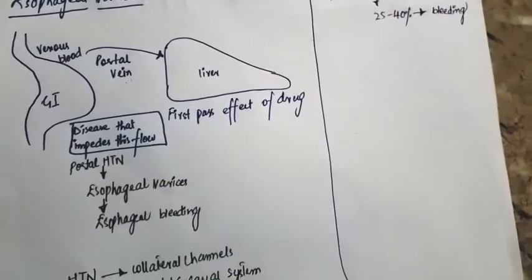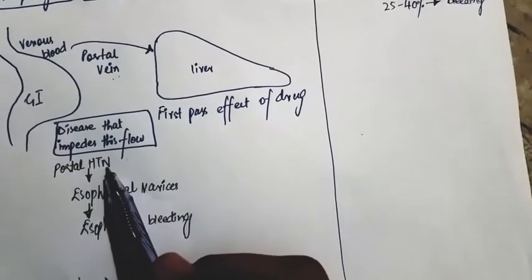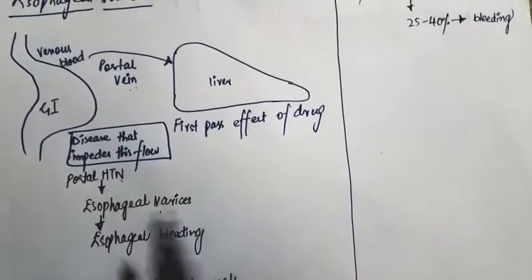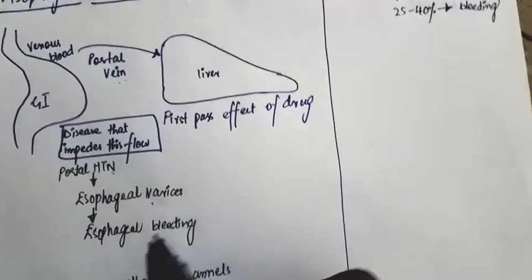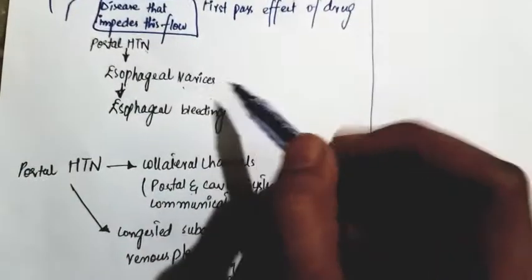Portal hypertension will cause esophageal varices, and these esophageal varices are going to cause esophageal bleeding. How does this portal hypertension cause esophageal varices?